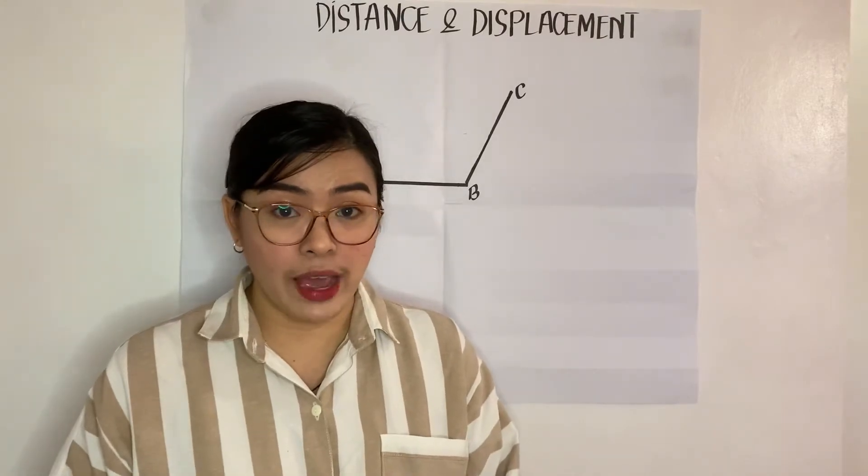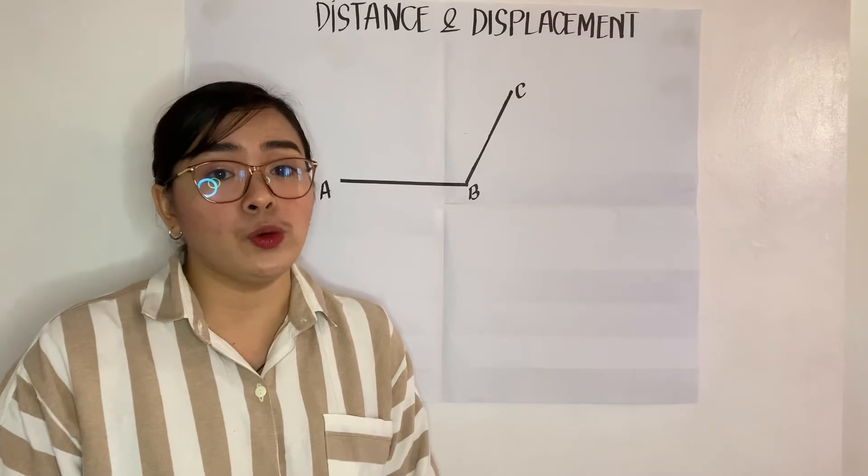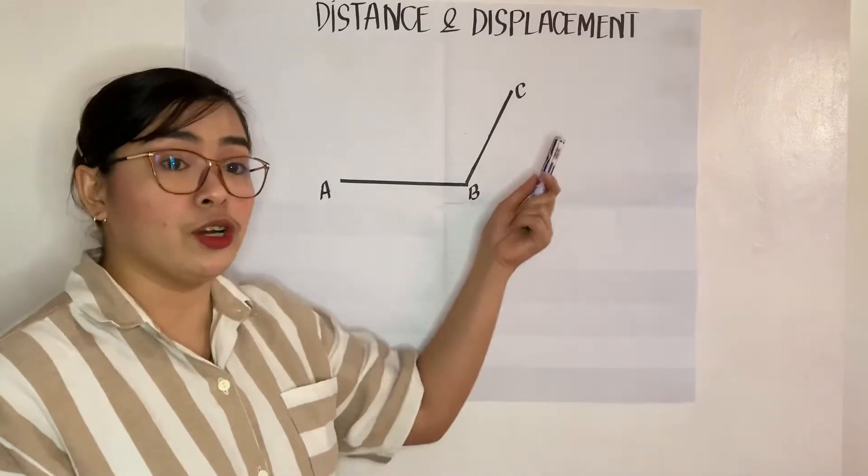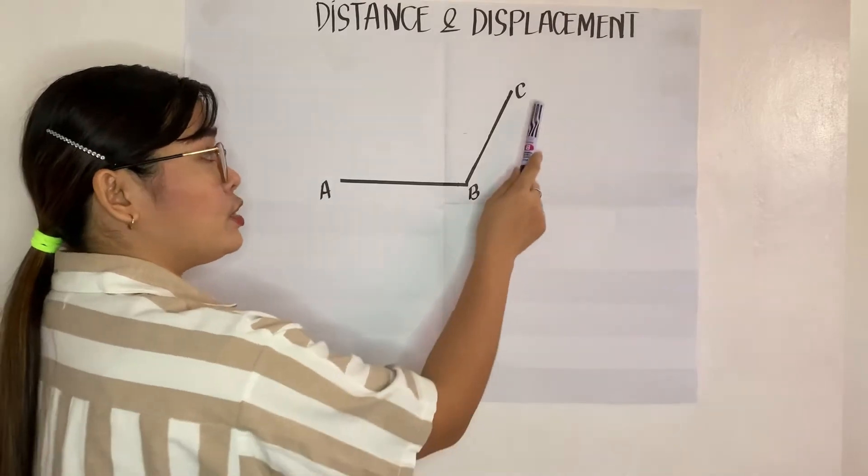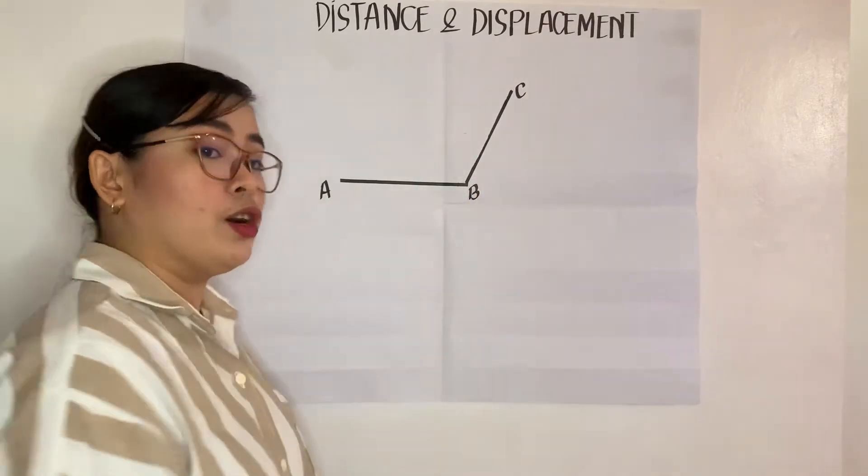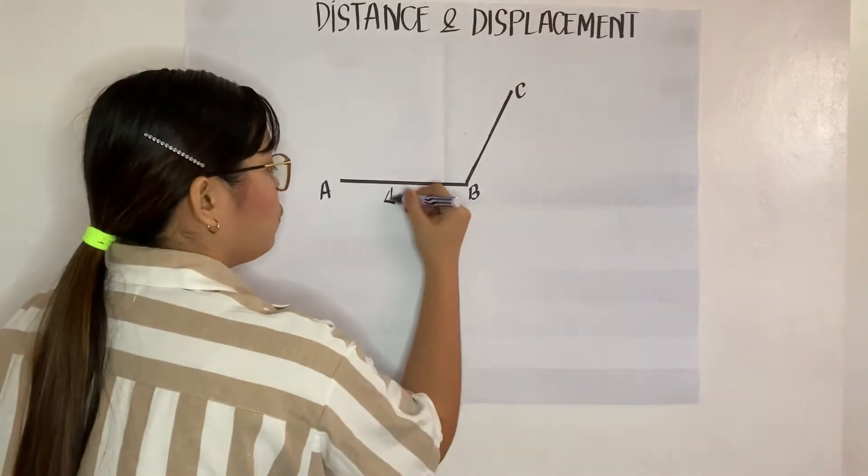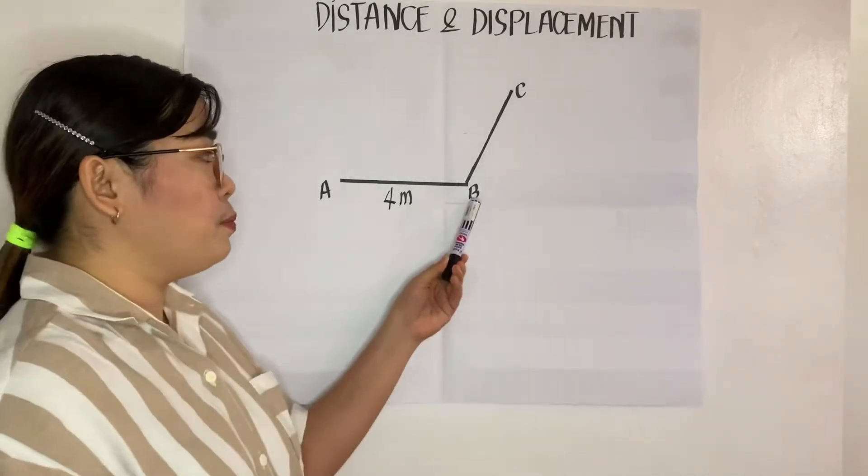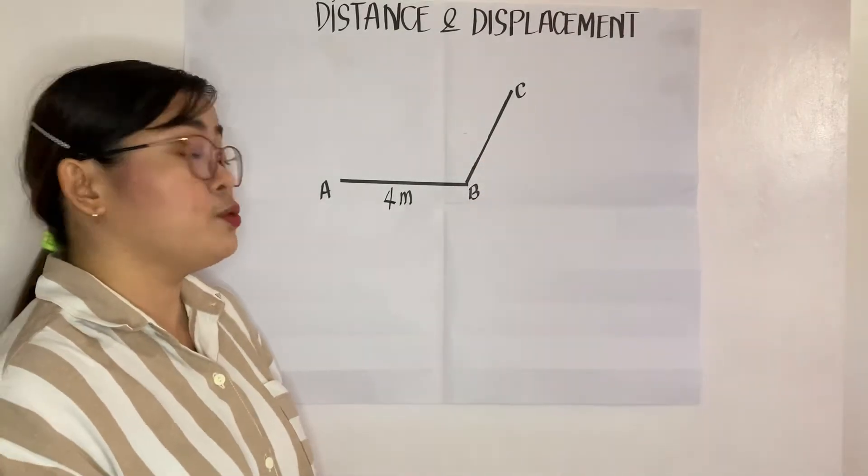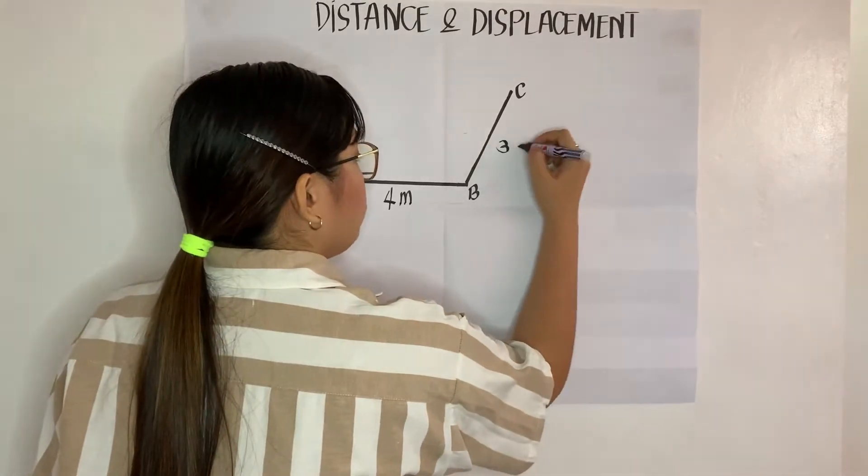Now, how are we going to define distance? Imagine that you're going to school and this will be your direction. Your point A will be your initial position and then point C will be your final position. From point A to point B, your distance is 4 meters. And then, from point B to final position, which is point C, is about 3 meters.